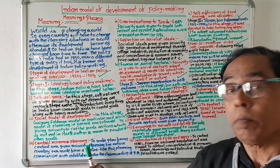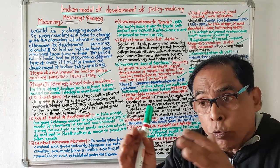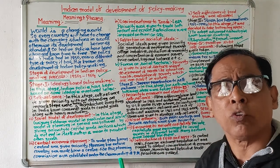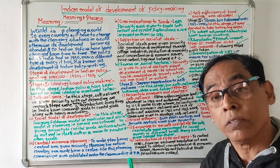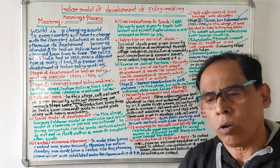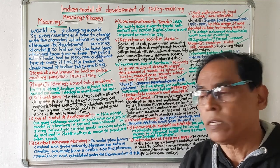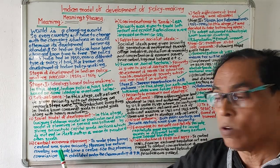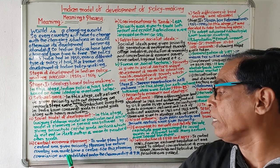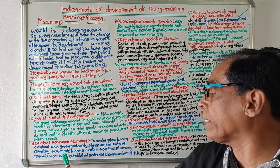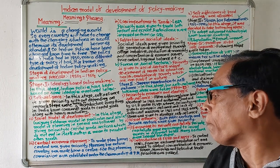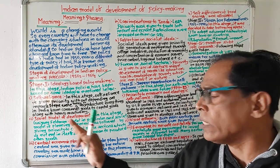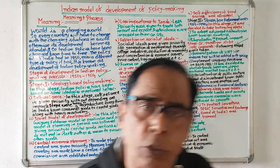The third principle was central economic planning. Priority was given to making plans for the country from the center. A Planning Commission was set up under the chairmanship of the Prime Minister. Planning for the entire country was made centrally — this was the third key principle of Indian policy in Stage 1.